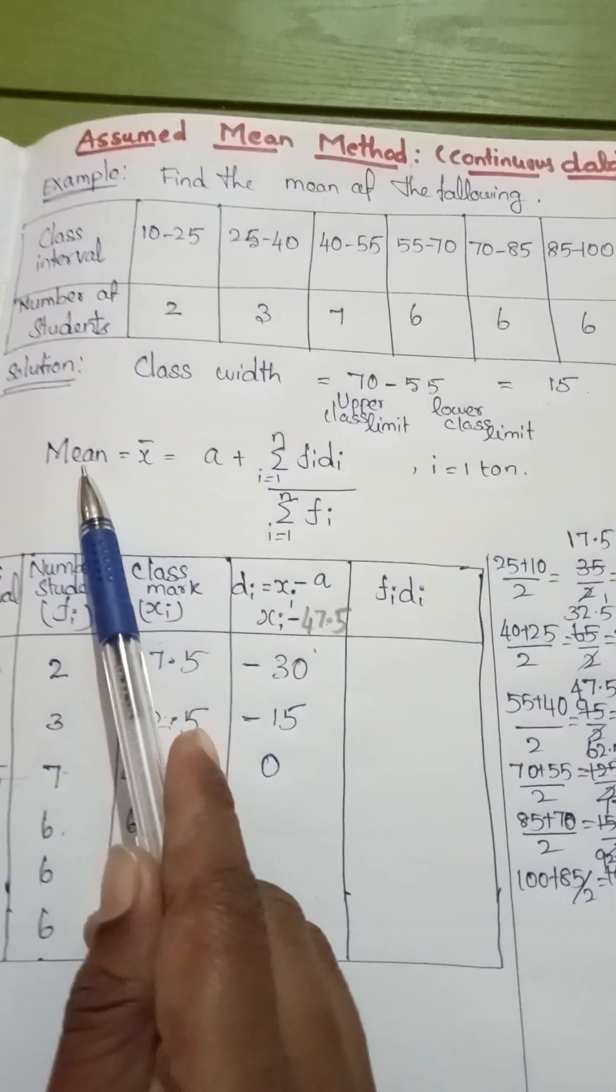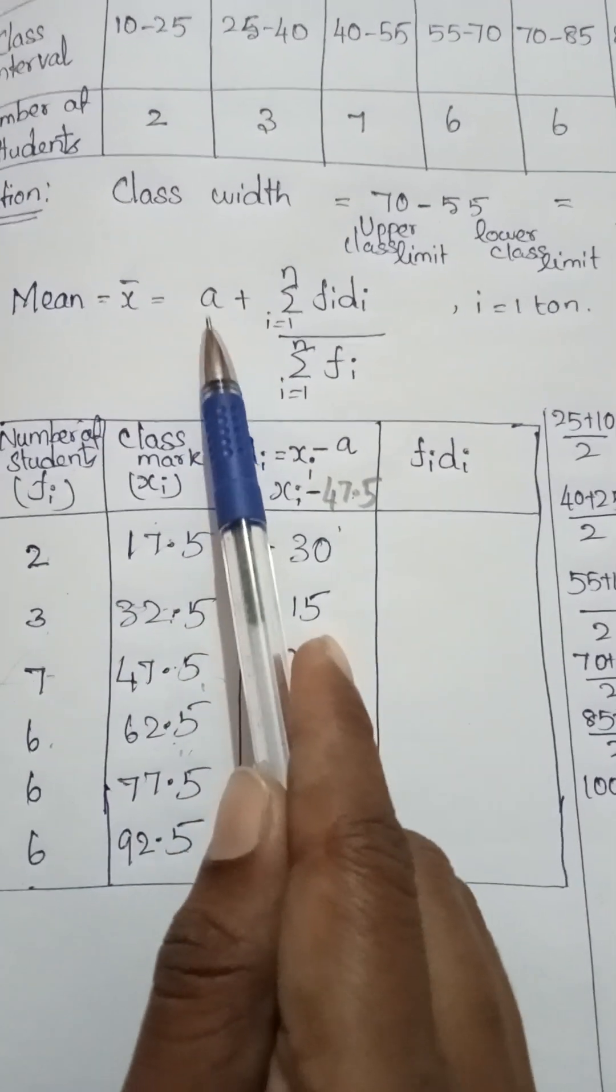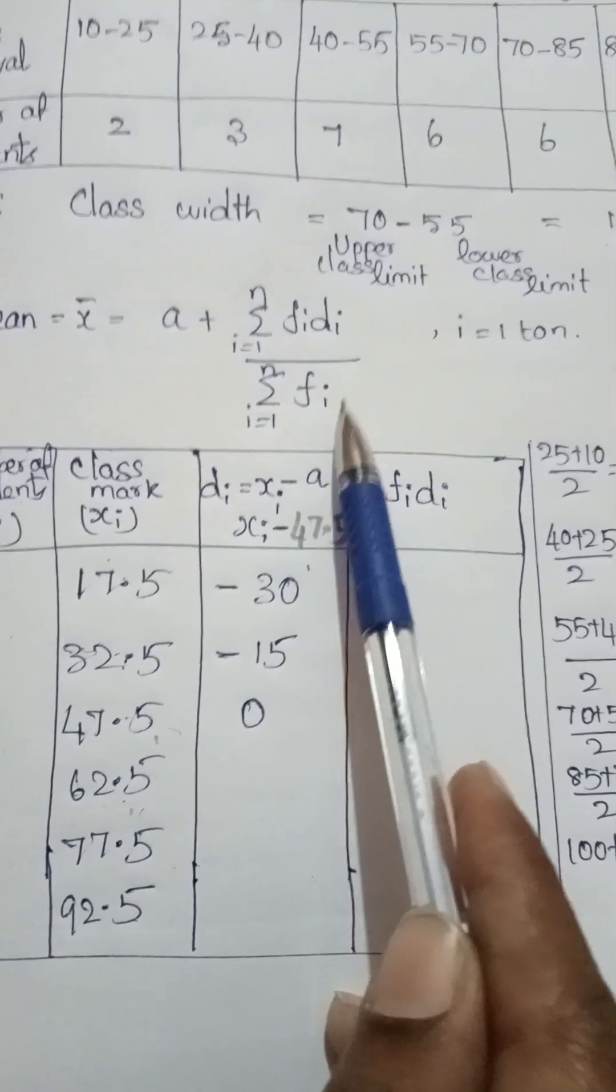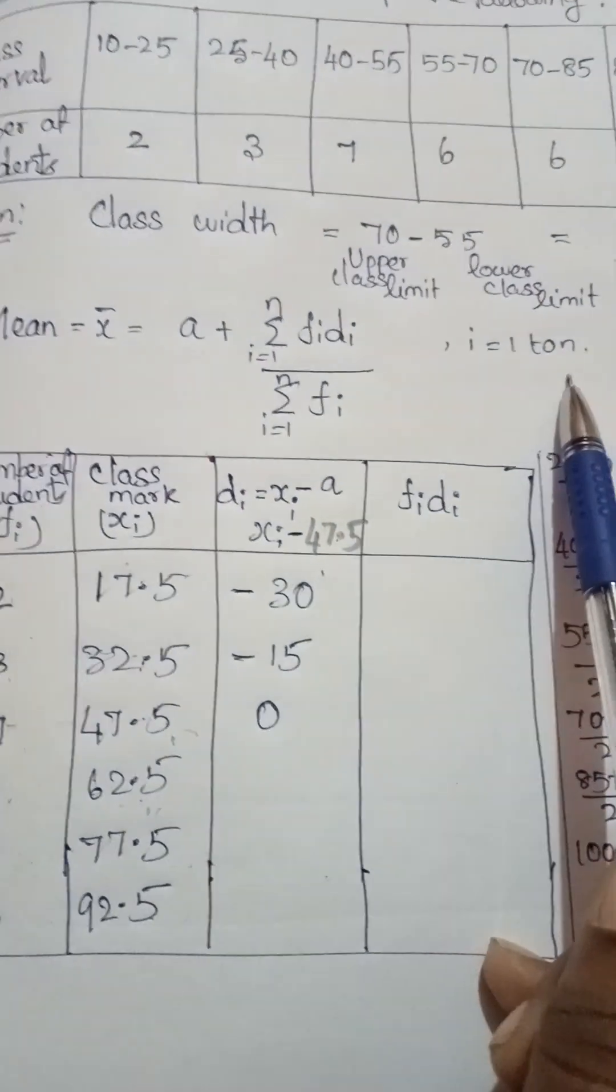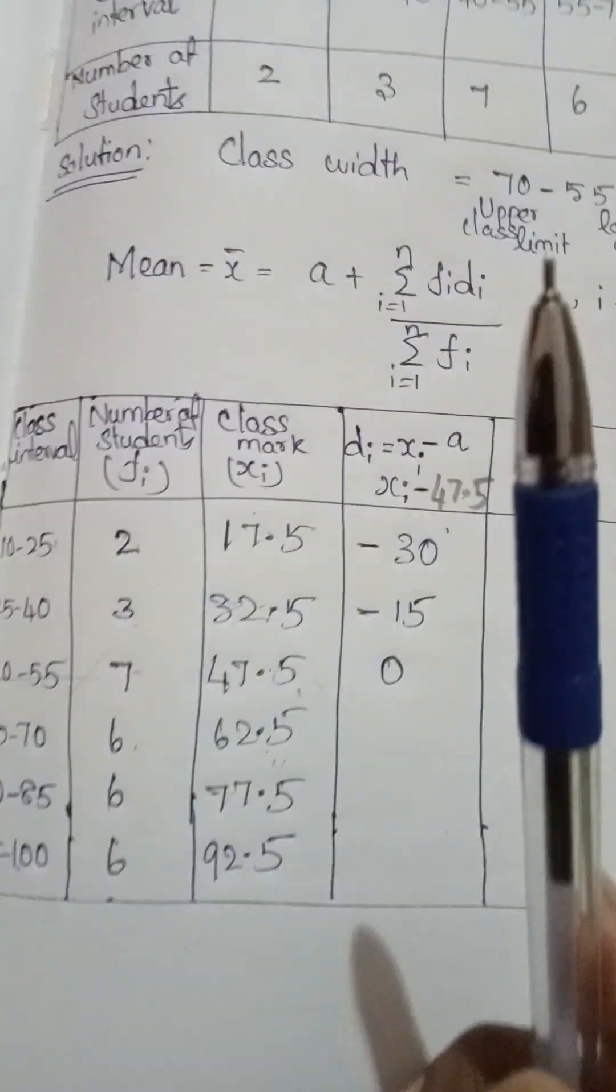Next, you know the formula for mean: x̄ equals a plus summation i equals 1 to n of fi times di divided by summation i equals 1 to n of fi, for all i equals 1 to n. Here small letter a is assumed mean.